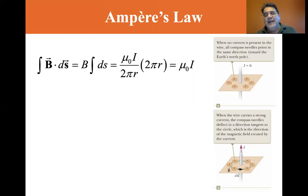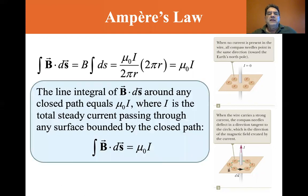And that's for any path, that line integral that goes around a wire. So the line integral of B dot ds around any closed path equals mu sub zero times i, where i is the total steady current passing through any surface bounded by the closed path. So the integral of B dot ds is equal to mu sub zero times i.